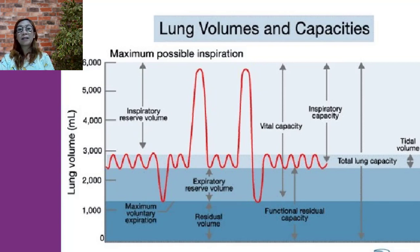Respiratory capacity or pulmonary capacity is the sum of two or more volumes. Factors such as age, sex, body build, and physical conditioning have an influence on lung volumes and capacities. Lungs usually reach their maximum capacity in early adulthood and decline with age after that.